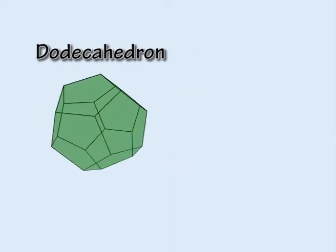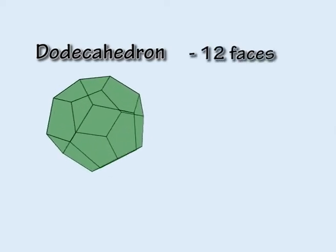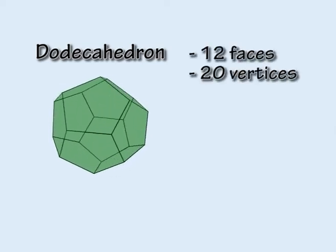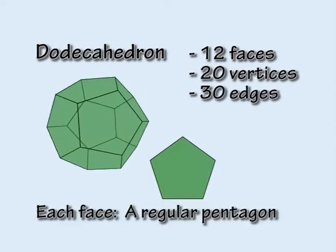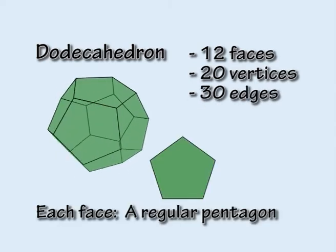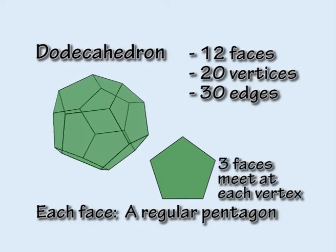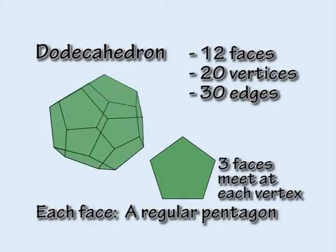The dodecahedron has twelve faces, twenty vertices, and thirty edges. Each face is a regular pentagon, with three pentagonal faces meeting at each vertex.